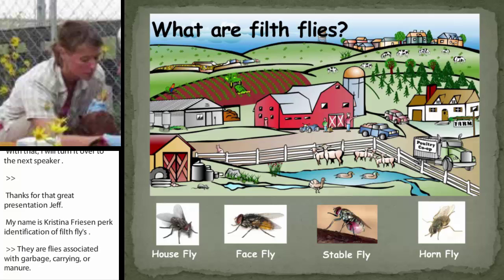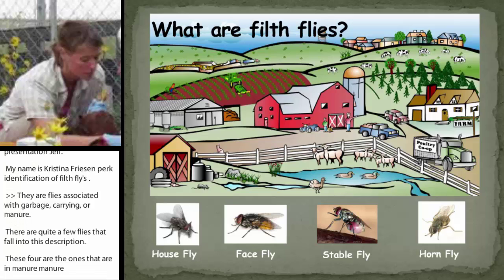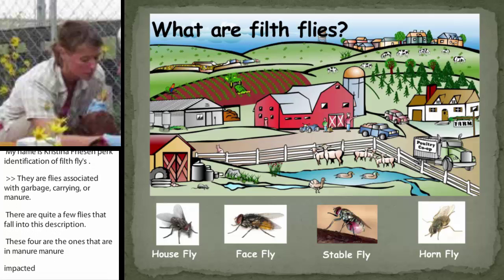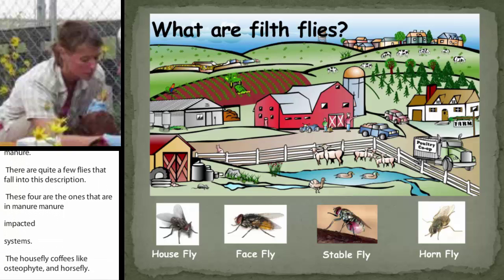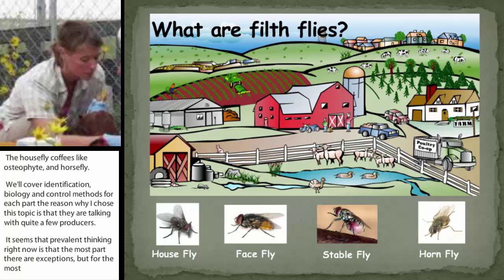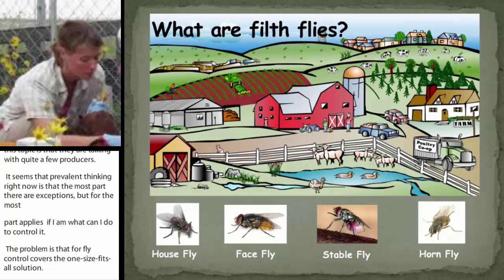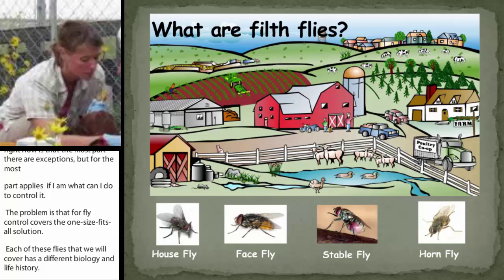Those four flies are the house fly, the face fly, the stable fly, and the horn fly. As we proceed through the talk, I'm going to cover identification, biology, and control methods for each. After talking with quite a few producers, it seems like the prevalent thinking is that a fly is a fly and what can I do to control it. The problem is that for fly control, there is no one-size-fits-all solution. Each of these flies has a different biology and life history, meaning control methods need to be tailored to each species. To have an effective fly control program, you really need to know what kind of fly you're dealing with and something about its development and behavior.